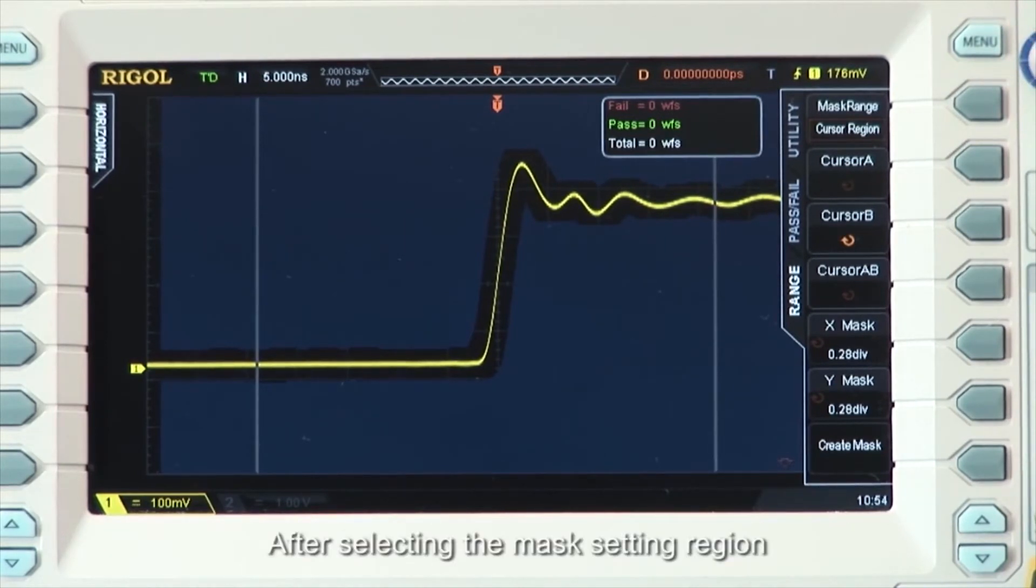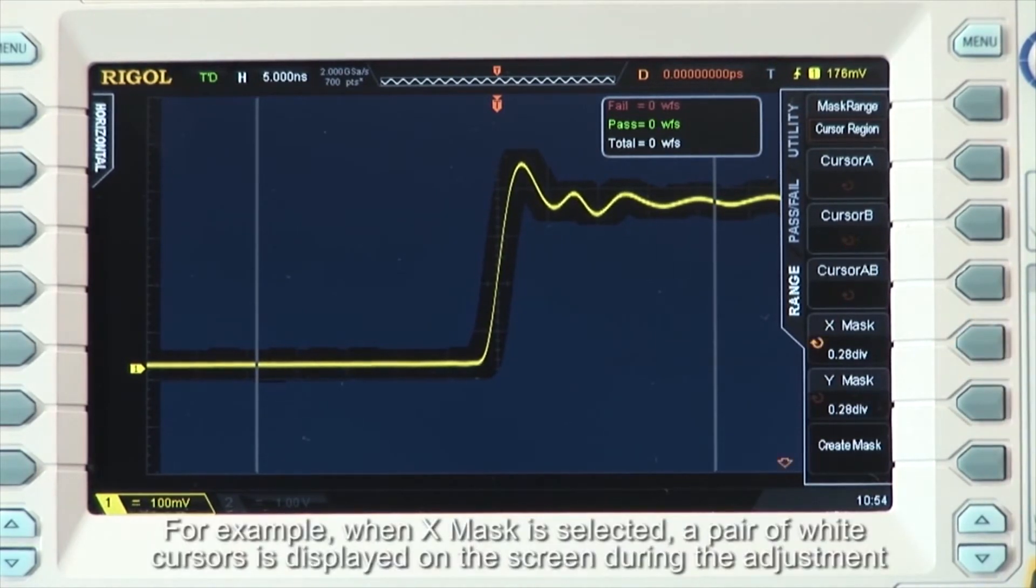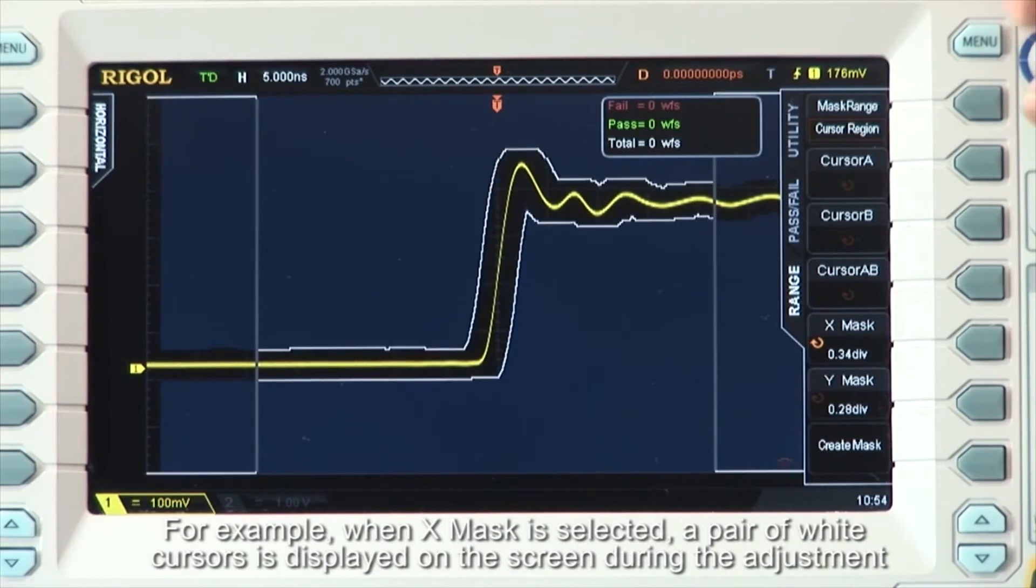After selecting the mask setting region, set the mask range using Xmask and Ymask controls. For example, when Xmask is selected, a pair of white cursors are displayed on the screen during adjustment.